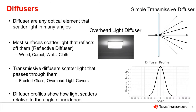Diffusers are another way of increasing the system field of view, but do so in a very different way than lenses. A diffuser is any optical element that scatters light or randomizes the angular profile of light with respect to the initial angle of incidence. Diffusers are often described as softening bright light sources in this way.